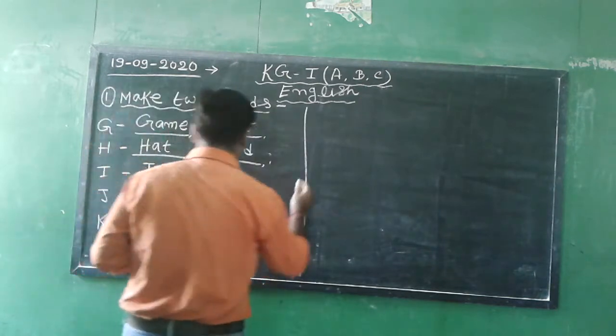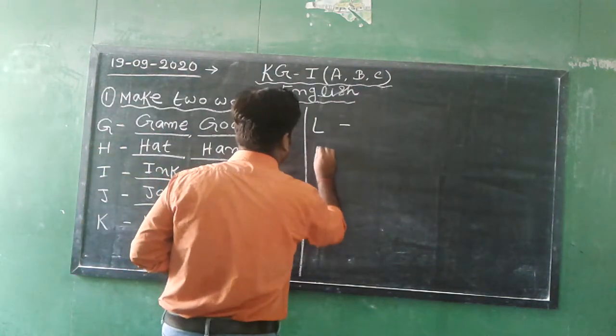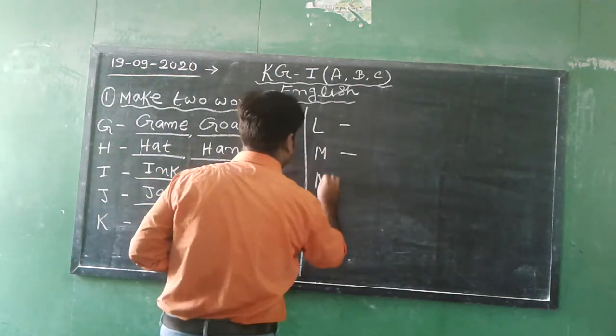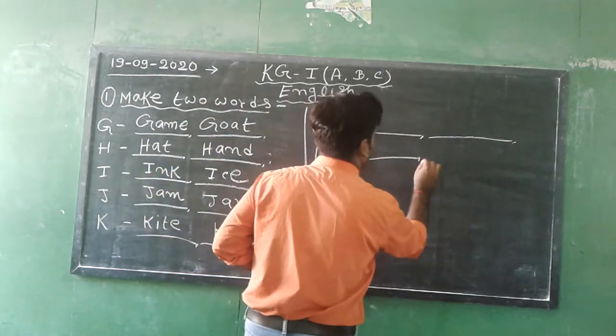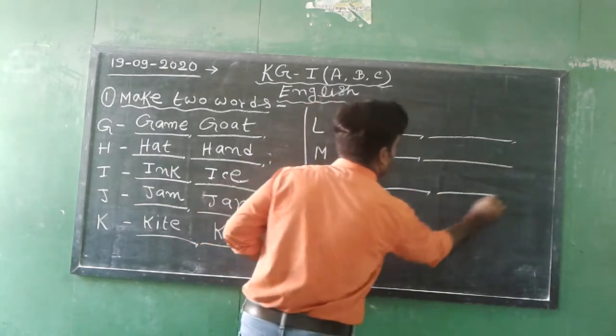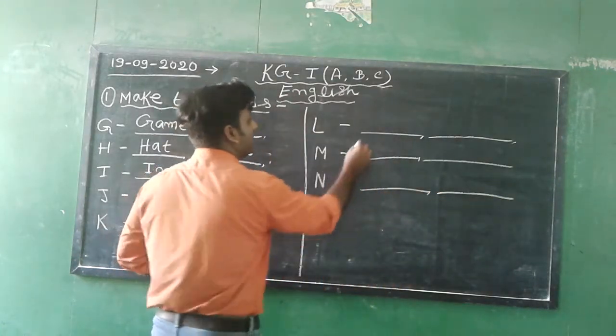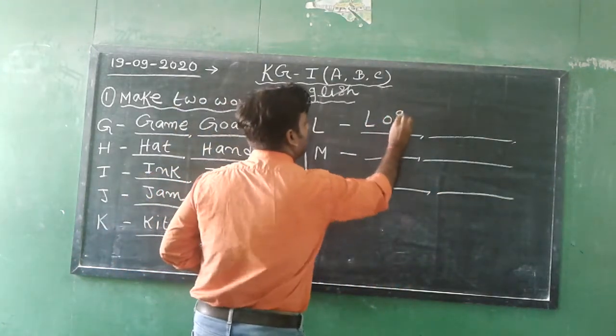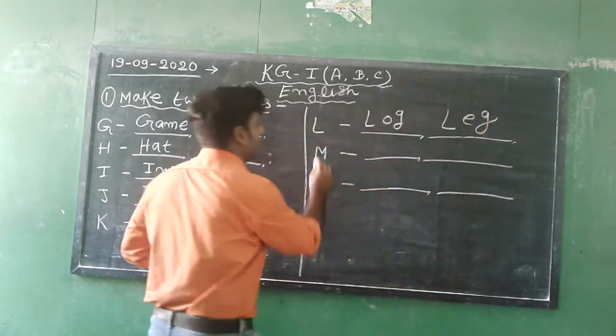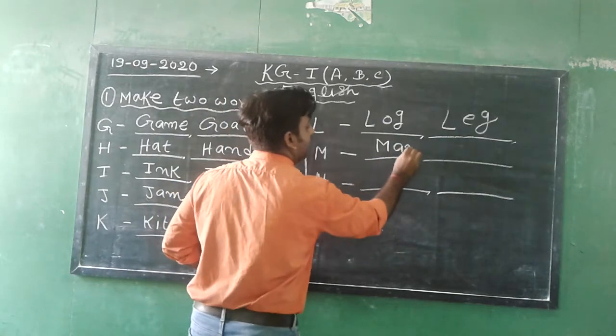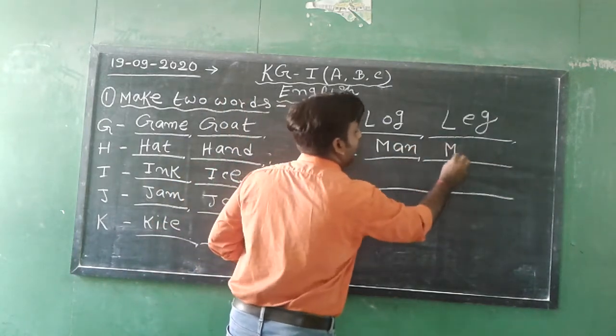Next, L for log, L-O-G log, and leg, L-E-G leg. M for man, M-A-N man, and map, M-A-P map.